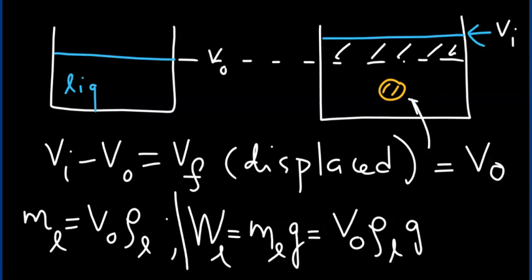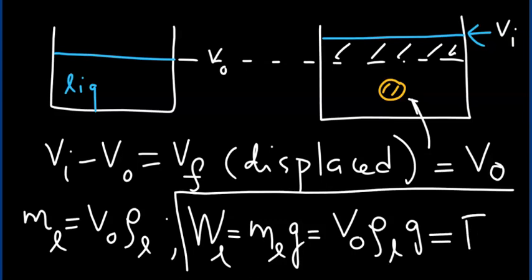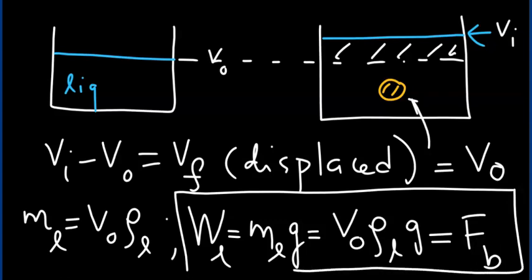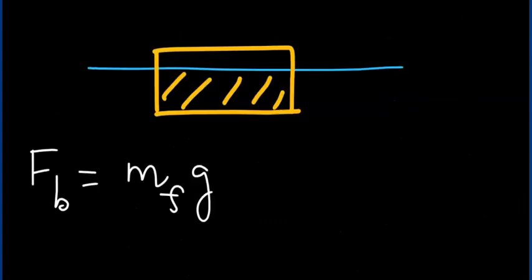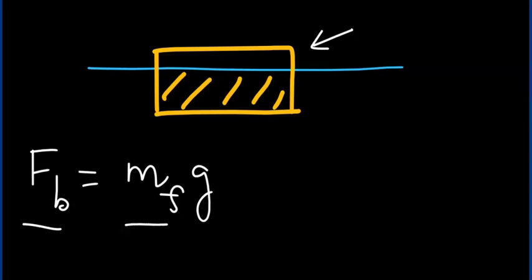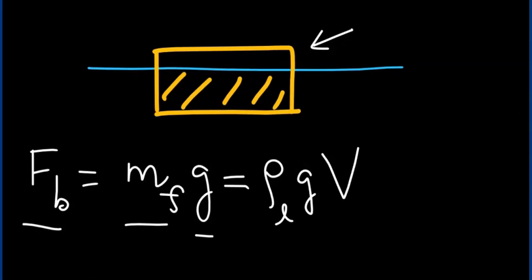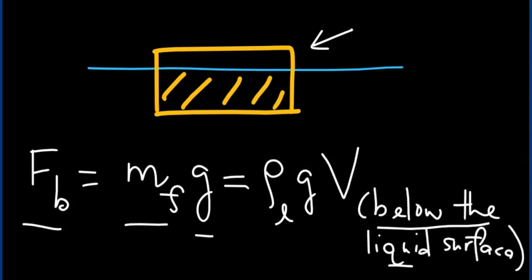Archimedes' Principle states that this weight of the liquid displaced is the buoyant force acting on the object. In the case where an object is partially immersed in a liquid, the buoyant force is given by the density of the liquid times gravity times the volume of the object below the liquid surface — meaning only that submerged portion of the object's volume.